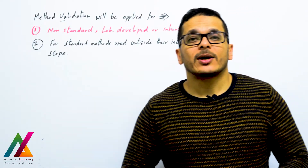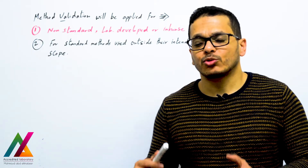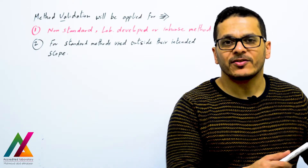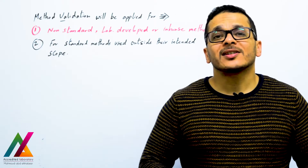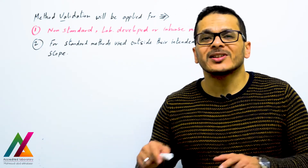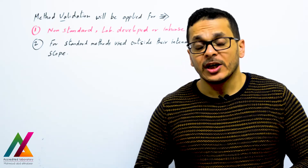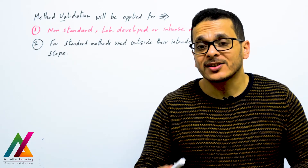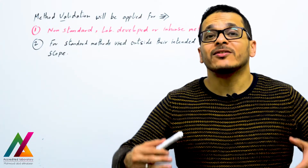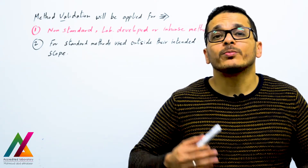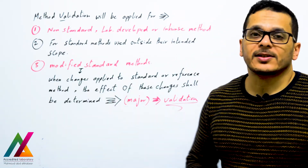Method validation also applies for standard methods used outside their intended scope. If you have a reference method to analyze target analytes in a specific matrix, but you want to use it in a completely different matrix, you will adapt this method to extract your target analytes from that matrix. Because of this adaptation, you should perform validation. It also applies for modified standard methods.